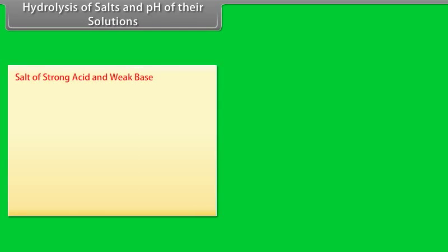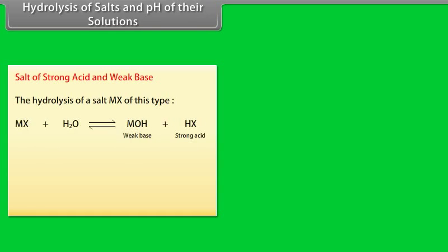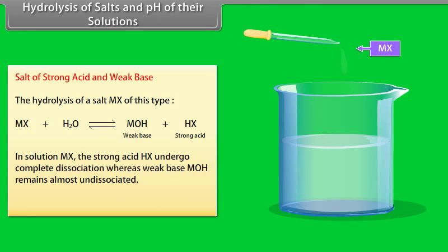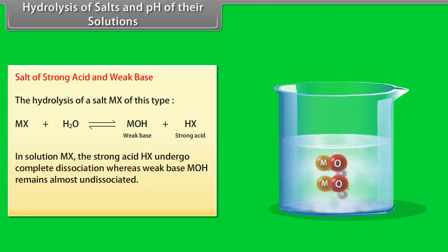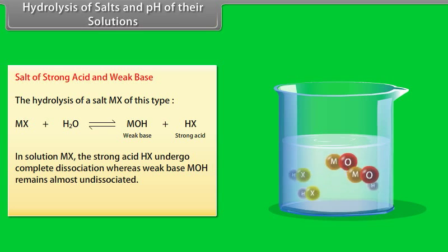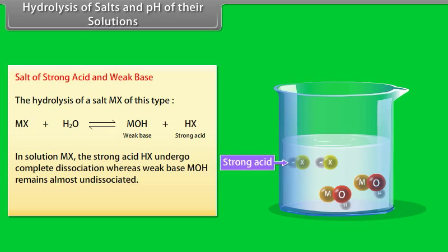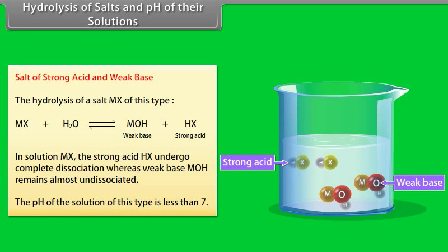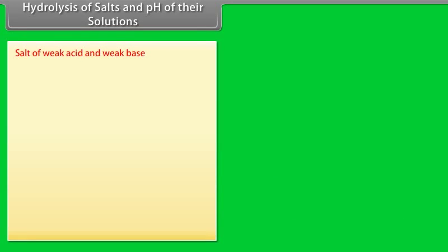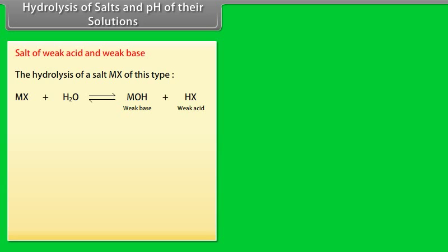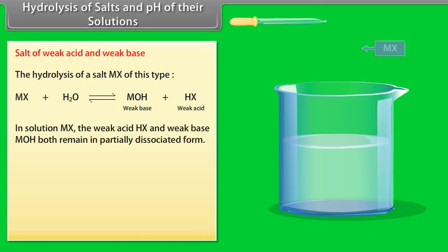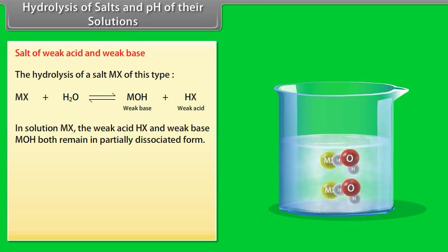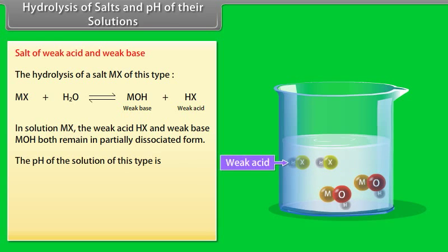For a salt of a strong acid and a weak base, the strong acid HX undergoes complete dissociation whereas the weak base MOH remains almost undissociated. The pH of this type of solution is less than 7. For a salt of a weak acid and a weak base, both the weak acid HX and weak base MOH remain in partially dissociated form.